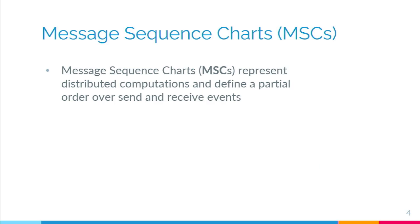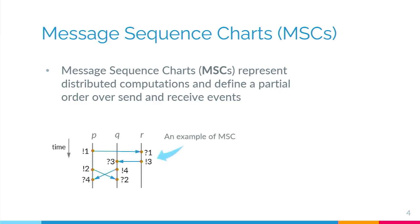Before diving into the content of the paper, I would like to quickly talk about message sequence charts, or MSCs for short, which are a graphical representation used to represent distributed computation. They define a partial order over send and receive events. Here you can see an example of an MSC: each vertical line represents the lifetime of a process or device in a distributed system. Time flows from top to bottom, and the blue arrows are used for messages. Process P is sending a message to process R. By convention, we use an exclamation mark to denote a send event and a question mark to denote a receive event. The number is used as a label for the message.